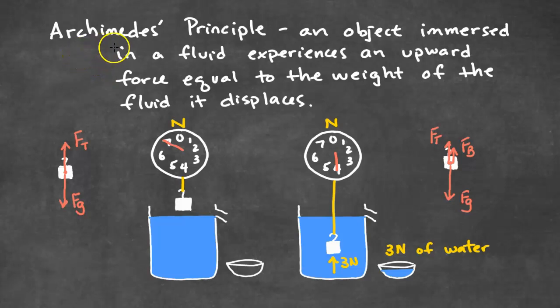Now, we're going to take a look at Archimedes' principle, which states that an object immersed in a fluid experiences an upward force equal to the weight of the fluid it displaces. Here we have a scale. And we're weighing this hook mass, which has a weight of 7 newtons. Here is the force diagram of the hook mass. We have Fg down and Ft going upward.